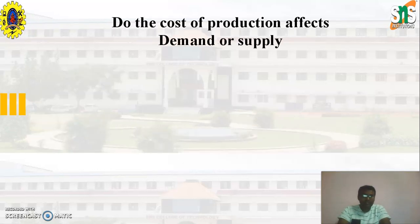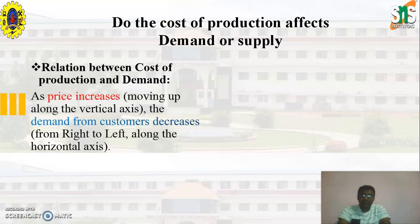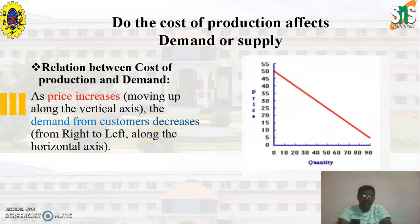First — does the cost of production affect demand or supply? We are going to discuss demand vs. supply based upon the cost of production in case of goods. As price increases, the demand from customers decreases, as shown in the graph. As the price of the product increases, the demand of the product decreases. This is the first major point.